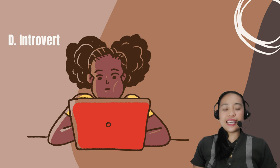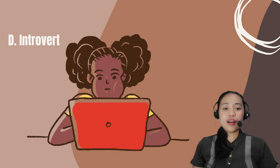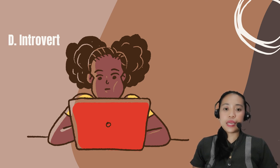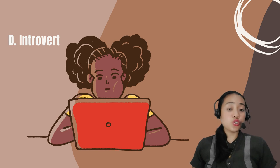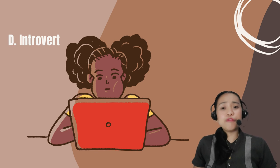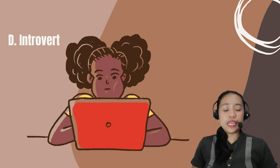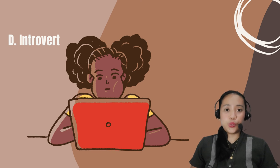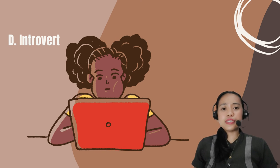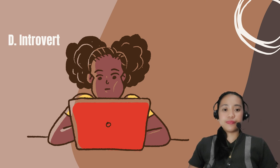The correct answer is Letter D. Carl Jung outlined some personality types, one of which is introvert, exemplified by being shy and preferring to do things alone. Extrovert is the opposite of introvert.